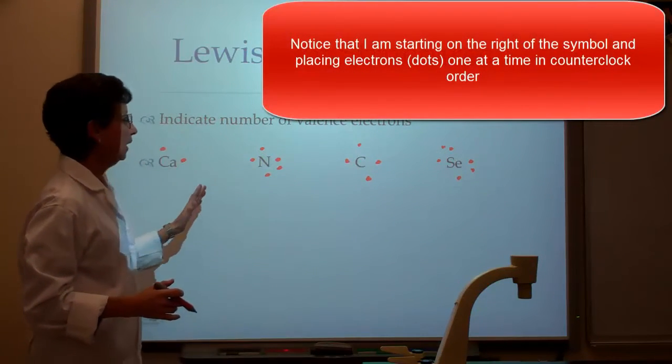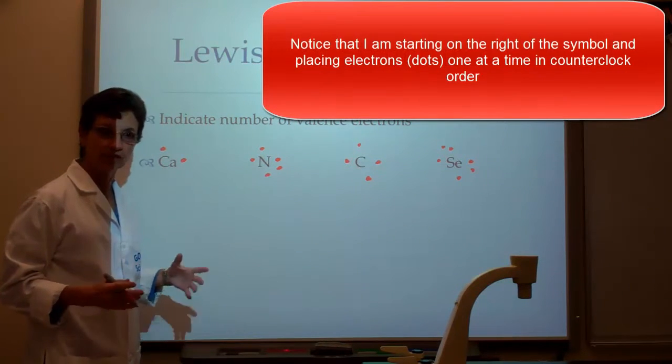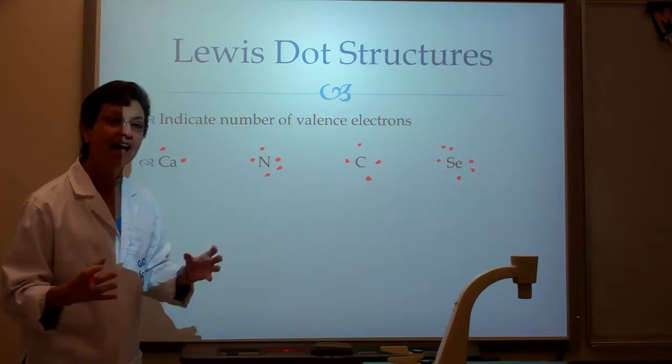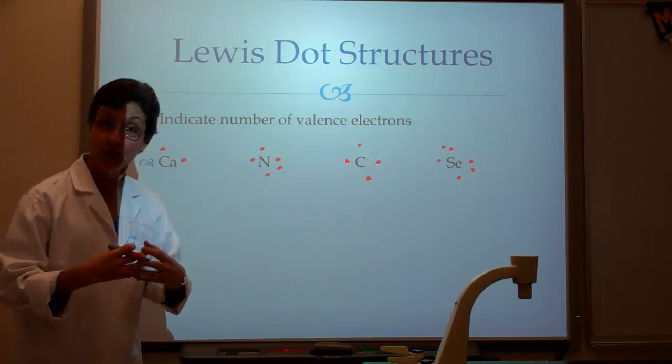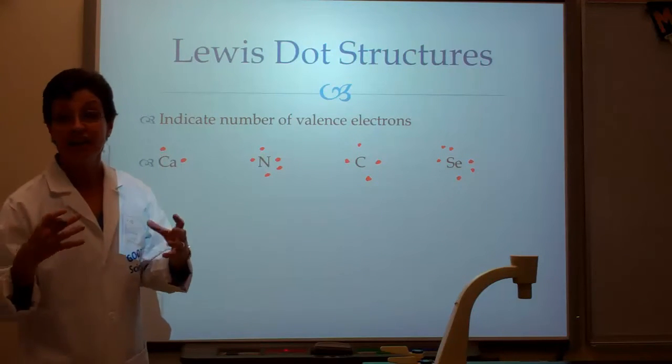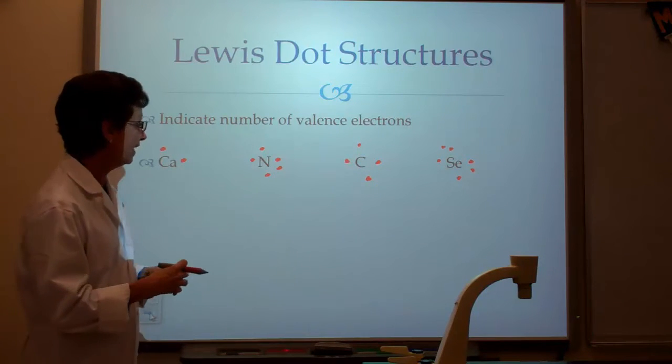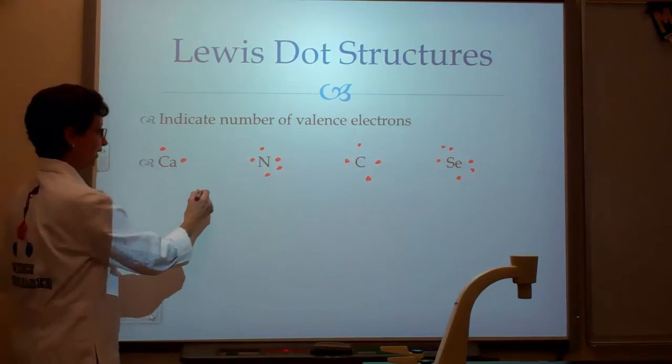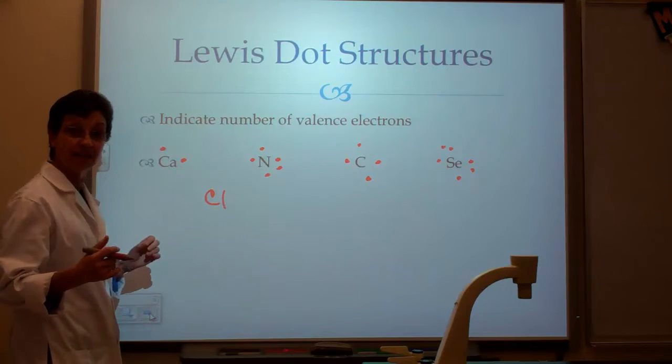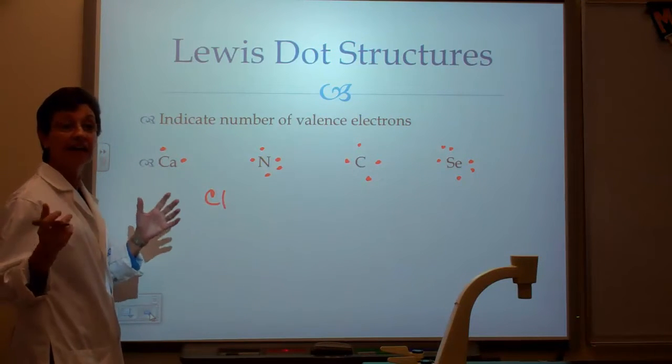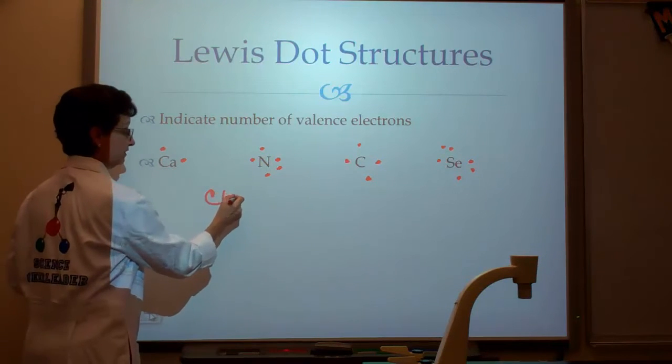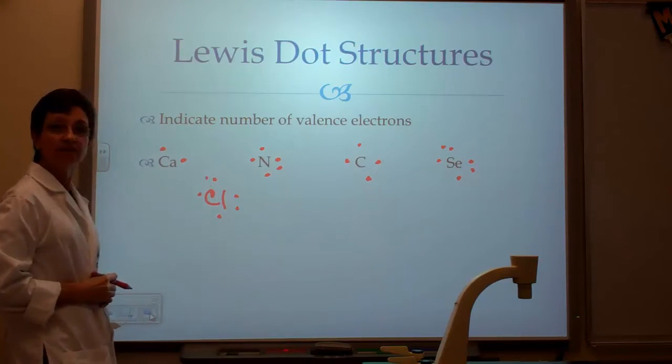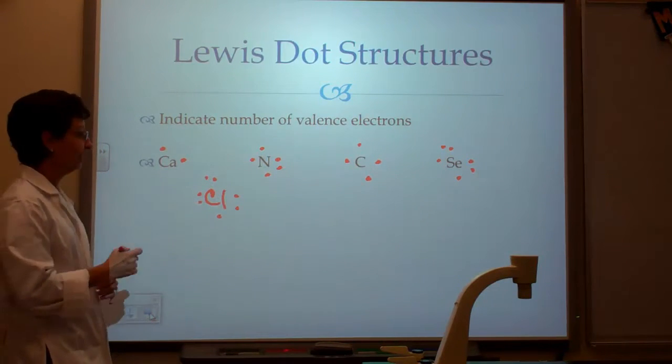Now, why is this important? Why are these valence electrons important? Because when we start putting together atoms, we can start to realize how they either transfer or how they can share electrons and form those bonds. So let's take, for example, calcium and chlorine. I'm going to take chlorine over here. I'm going to write chlorine, and I'm going to write its valence electrons, and it has seven valence electrons. So I'm going to write one, two, three, four, five, six, and seven valence electrons.